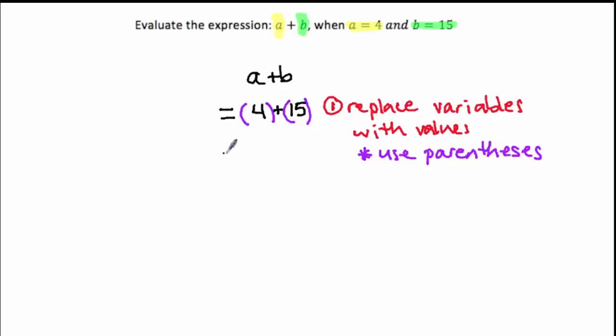Now our final step is just to evaluate this, which is to add 4 plus 15 which is 19. So that becomes our evaluation step.